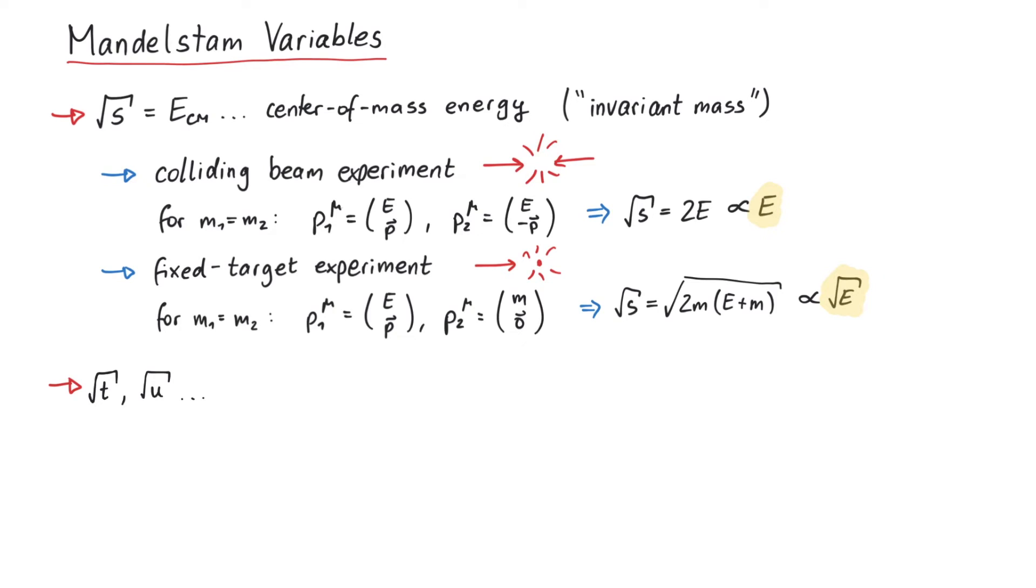The square roots of t and u are called four-momentum transfer. This name becomes evident when we consider the t or u channel of the tree-level scattering diagram. For example, in the t channel, particle 1 meets particle 2 and both particles exit with a new momentum.